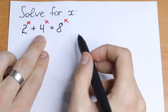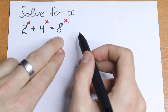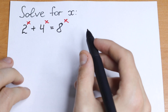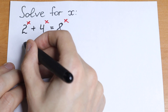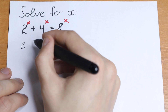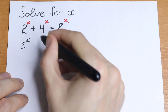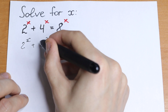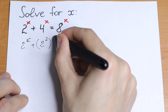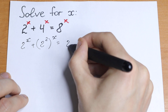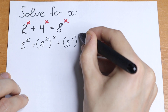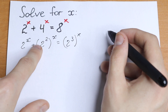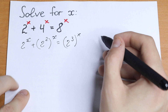We can write this 4 as 2 squared and this 8 as 2 cubed. So as a result all bases will be 2. We will have 2 to the power x, plus 2 squared raised to the power x, equal to 2 cubed raised to the power x. So we write 4 as 2 squared and 8 as 2 cubed.